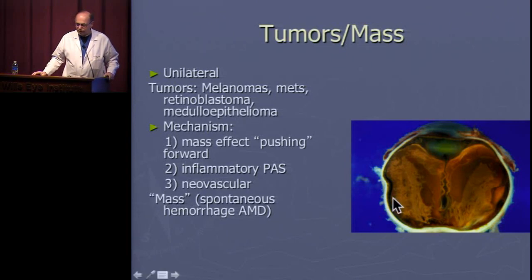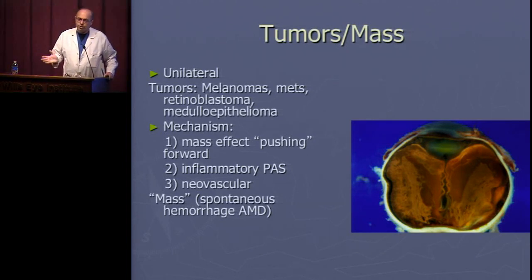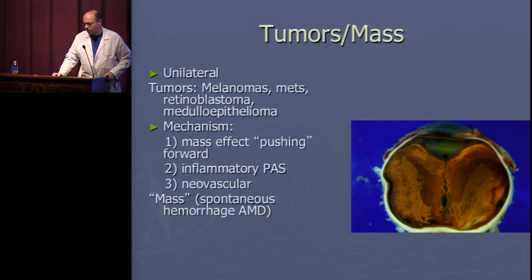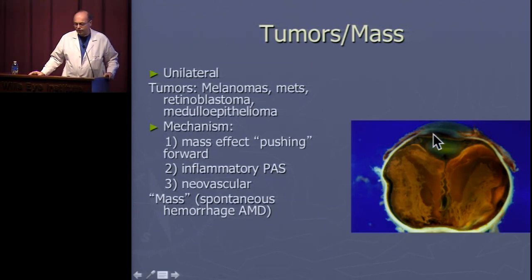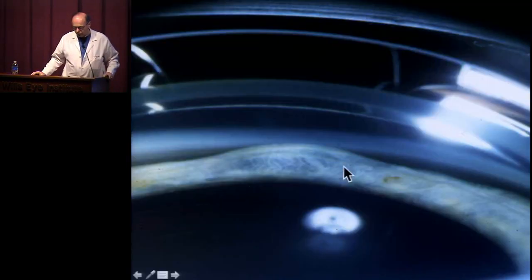Another situation is spontaneous hemorrhage. Cases have been collected of patients presenting with pressures around 70 mmHg, tremendous pain, history of mild AMD, on anticoagulation like warfarin or aspirin, who spontaneously develop a subretinal/suprachoroidal hemorrhage with mass effect — creating a shallow chamber and secondary angle closure glaucoma. These are often very difficult to treat with poor prognosis. During gonioscopy, if you see unusual lumps, investigate with UBM to better characterize what's behind them.